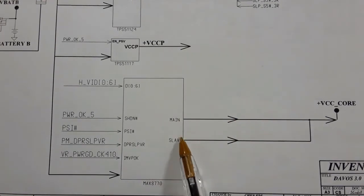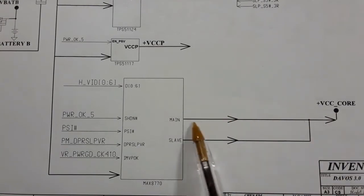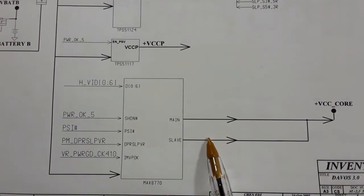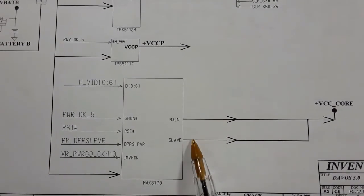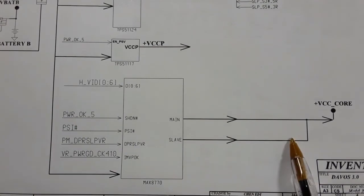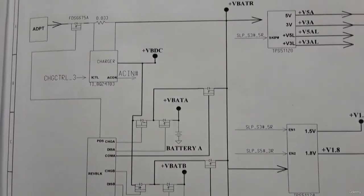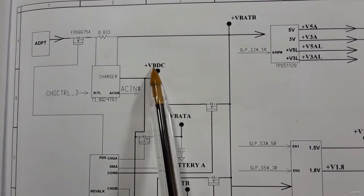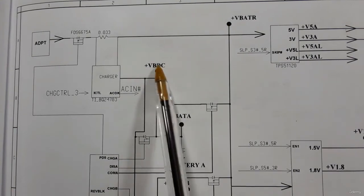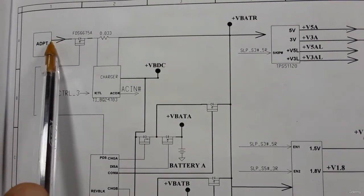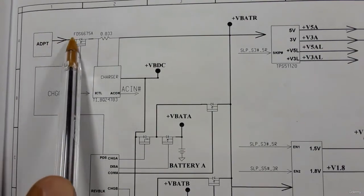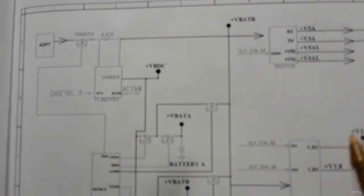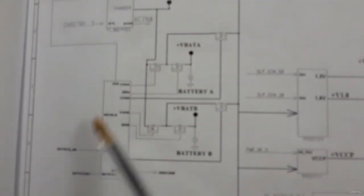The MAX8770 has signals including power, shutdown, and others. It has a main channel and a slave channel — when one channel is working, the other stops, and vice versa. Also, the V_battery is shown here: when the adapter is removed, the battery takes over to power the whole motherboard.